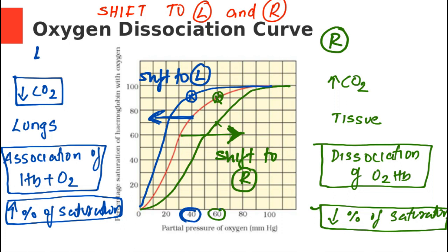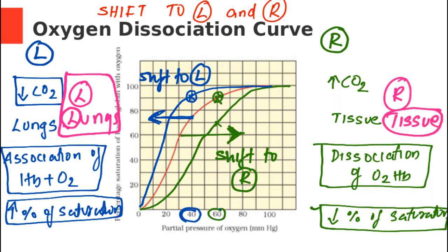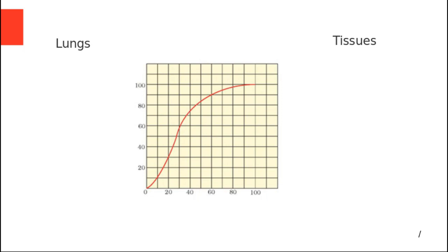There is a mnemonic to remember this. The letter L stands for Lungs — conditions in the lungs cause a shift to the left. On the other hand, conditions in the tissues cause a shift to the right. Let's now list the various conditions in the lungs and tissues that cause a shift to the left or right.